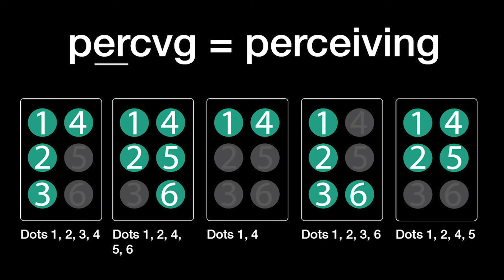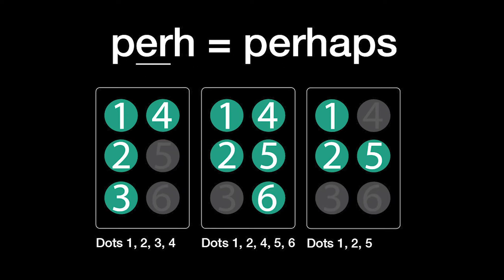Perceiving is P plus E-R-C-V-G: dots 1, 2, 3, and 4, plus dots 1, 2, 4, 5, and 6, plus dots 1 and 4, plus dots 1, 2, 3, and 6, plus dots 1, 2, 3, and 6, plus dots 1, 2, 4, and 5. Perhaps is P plus E-R-H: dots 1, 2, 3, and 4, plus dots 1, 2, 4, 5, and 6, plus dots 1, 2, and 5.